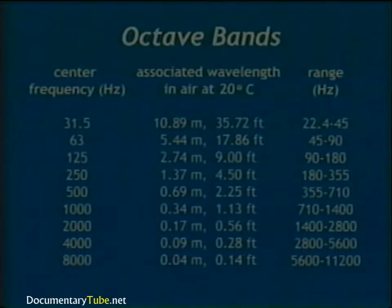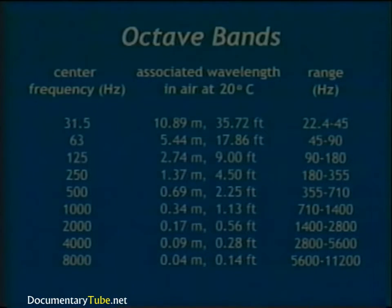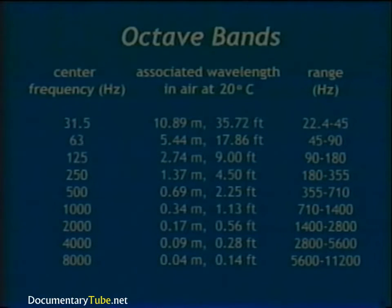For octave band analysis, the entire frequency spectrum is divided into one-octave bands. The center frequency of each band is one octave higher than the previous band. For example, at 31.5 Hz the wavelength in air is 10.89 meters (35.72 feet), and at 8000 Hz the wavelength is 0.04 meters (0.14 feet).